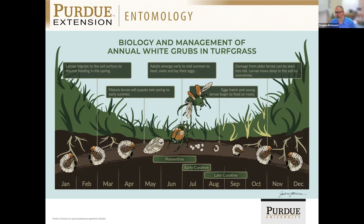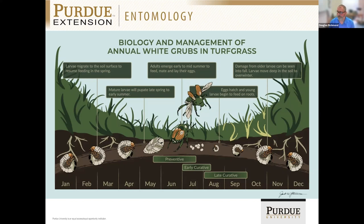We have a couple of ways to manage them. We can manage them preventively by going out before there's any damage or any grubs actually in the soil feeding, with some sort of preventive chemistry — put that down as a protective barrier, use it prophylactically to prevent the possibility of grub damage. The next window is early curative — that is when there are eggs and maybe larvae in the soil but before damage has become visible. That's going to require some monitoring or scouting, but if you know there are eggs or larvae there, you can go in with appropriate chemistry and make sure they don't cause a problem. There will be a lot of similarity between materials used preventively and early curatively.